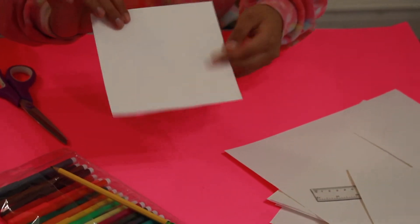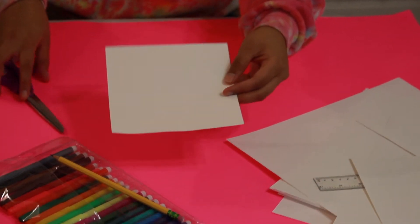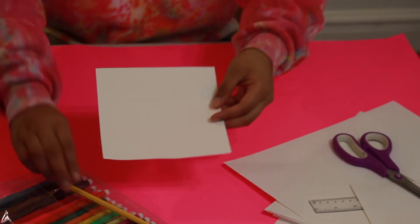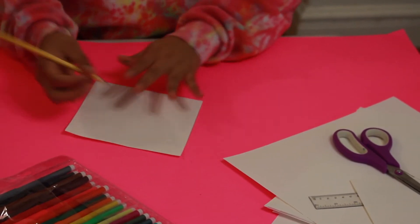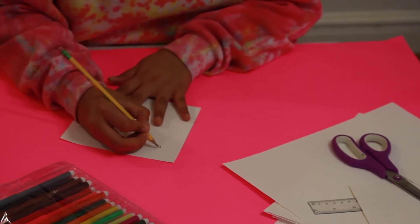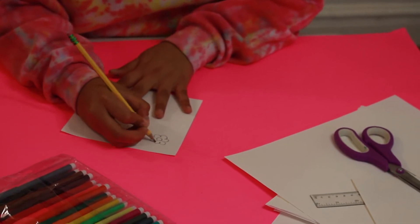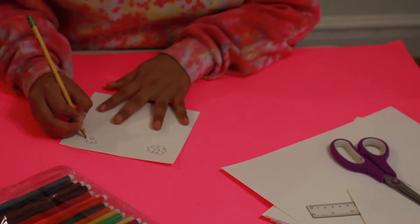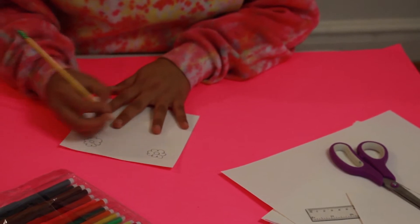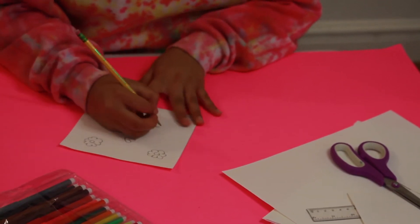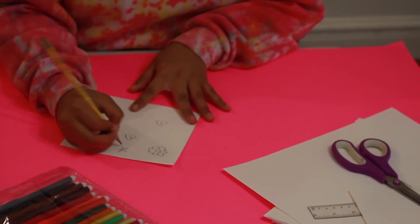Alright, now that I'm all done cutting my paper it is ready to go. So I'm going to do a cute little design on my paper. I'm going to do some flowers and some hearts and some stars. You can draw anything you would like on yours. You can draw silly little faces or you can draw a dinosaur or a shark.